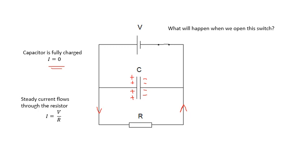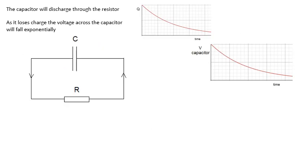What will happen when we open the switch? Well, when we open the switch, that lot disappears and we've just got the bottom half of the circuit. The capacitor will discharge through the resistor. The capacitor will lose its charge and its charge will go through the resistor. As the capacitor loses its charge, the voltage across the capacitor will fall, and Q and V will both fall exponentially.